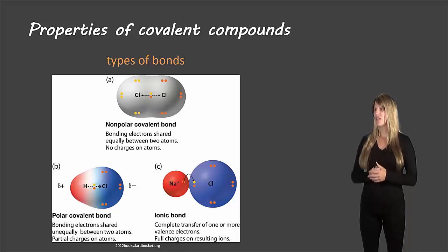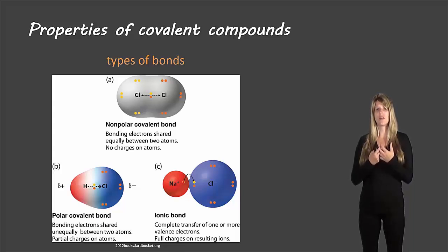On the bottom left we have polar covalent compounds. These are also covalent, so caused by a sharing of electrons, only the sharing is uneven. One atom pulls the electrons in a little bit stronger, so they spend a little bit more time around that atom, which causes it to be slightly negatively charged.